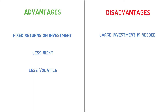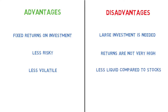जो bonds होते हैं, उनका जो price movement होता है, वो बहुत कम होता है. Second disadvantage है returns are not very high - debt investing में या फिर bonds के उपर जो आपको returns मिलते हैं, वो बहुत ज्यादा high नहीं होते हैं. Most of the cases में ये returns 6-8% के आसपास vary करते हैं. And the third disadvantage is less liquid compared to stocks - bonds को बेचना बहुत मुश्किल होता है क्योंकि bonds बहुत expensive होते हैं, तो इनके buyers बहुत कम होते हैं. That is why bonds का जो entire market है, money market, उसमें liquidity बहुत कम होती है, and this is one of the reasons कि bond market में volatility भी कम होती है.